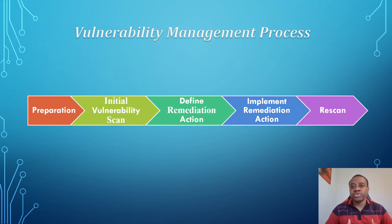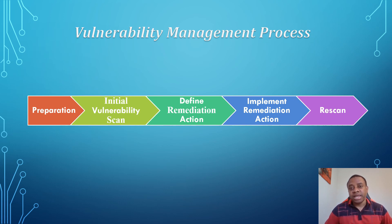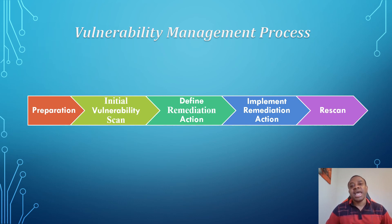After determining the risk to each vulnerability, the security analyst will develop the Plan of Action and Milestones (POA&M), which is a CA-5 control. The POA&M is used to determine the remediation timeline for each identified vulnerability, to document any identified vulnerability, and to track those vulnerabilities to remediation.